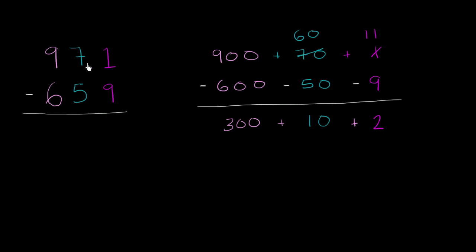Now let's do the exact same thing here, but we're going to do it without expanding it out. So same issue. How do we subtract a 9 from a 1? Well, let's take a 10 from the tens place. We're going to regroup. So we're going to get rid of one of these tens. So we're only going to have 6 tens left in the tens place. And we're going to give that 10 to the ones place. So 10 plus 1 is 11.